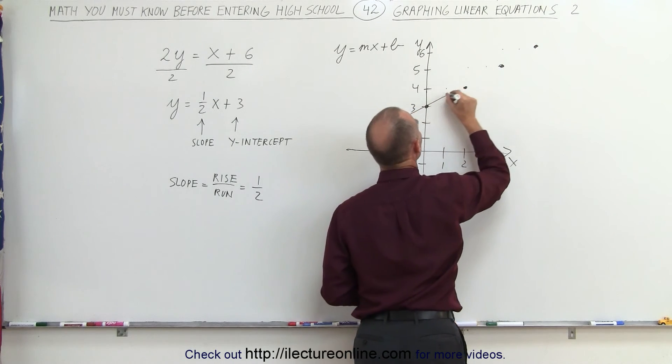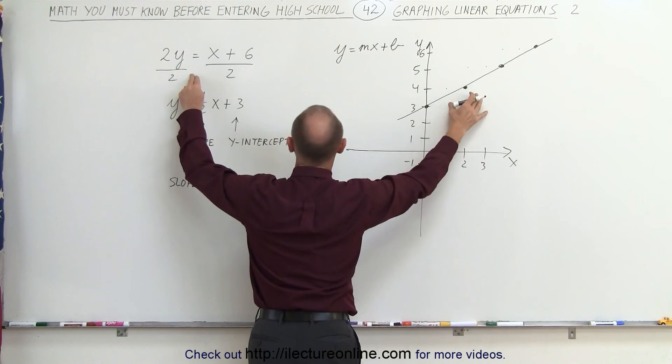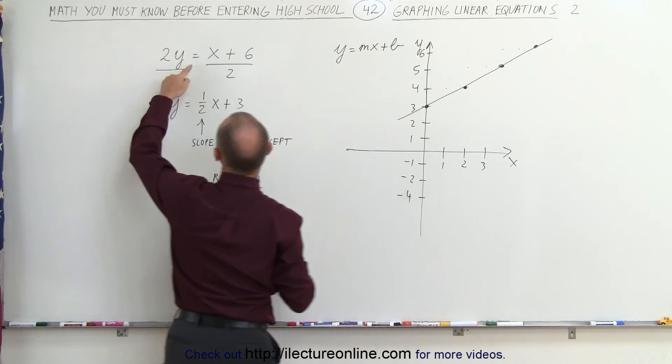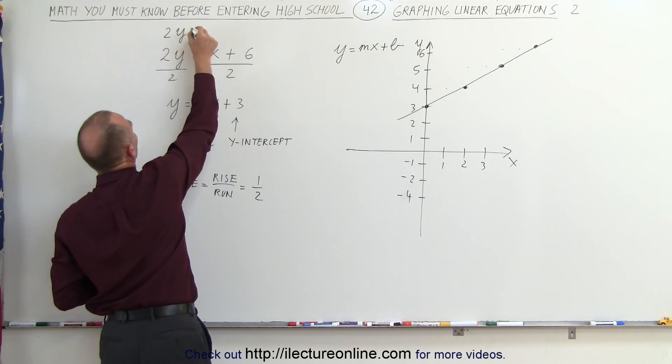When I connect all those points together, there's a line that represents the solution, the graphic solution, to the equation 2y equals x plus 6. Let me write the equation by itself again over here.